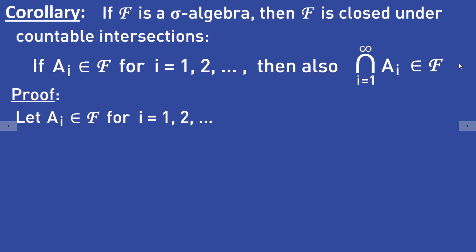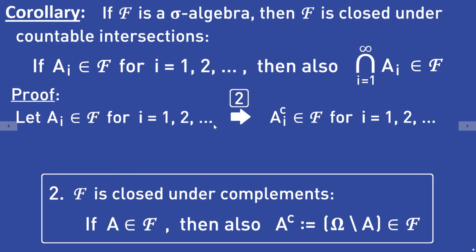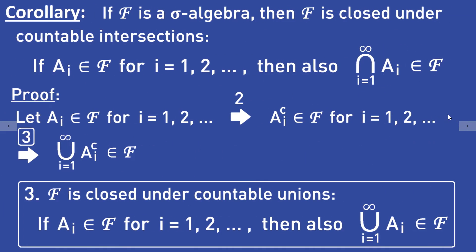Let's prove this corollary. Let Aᵢ be in F, for i equal to 1, 2, and so on. It follows from property 2 that the complements of these sets Aᵢ are also in F, for i equal to 1, 2, and so on. It follows from property 3 that the union of these complements is in F.